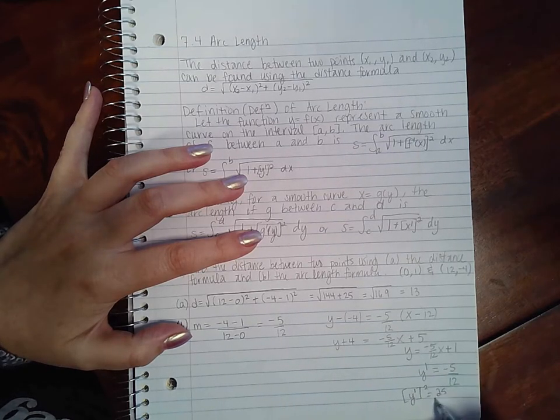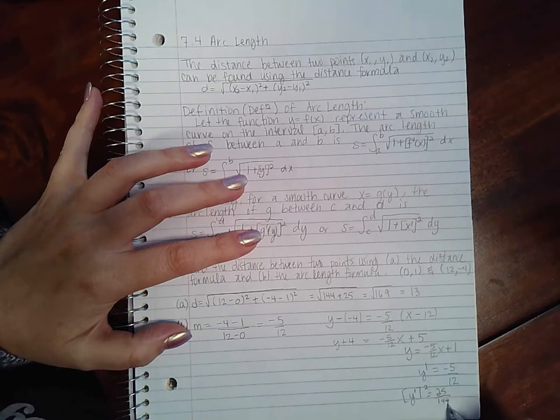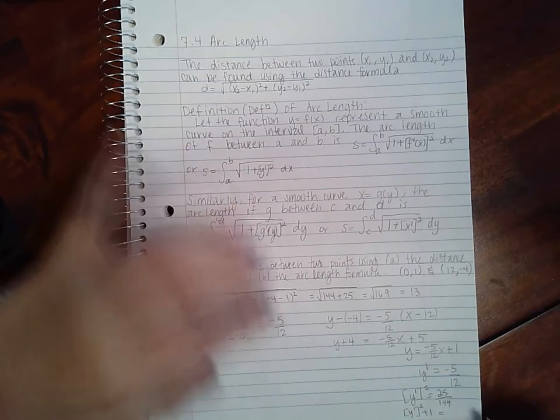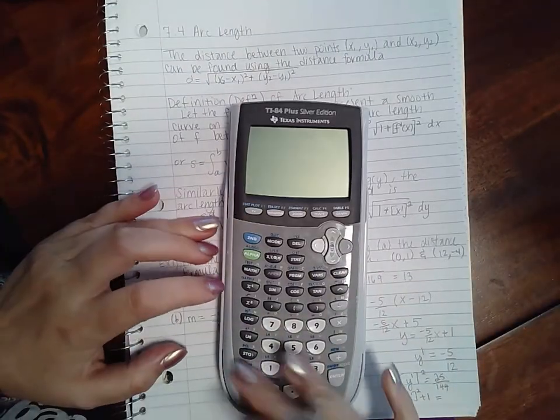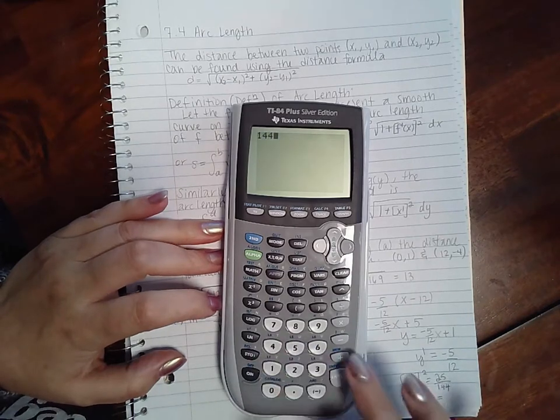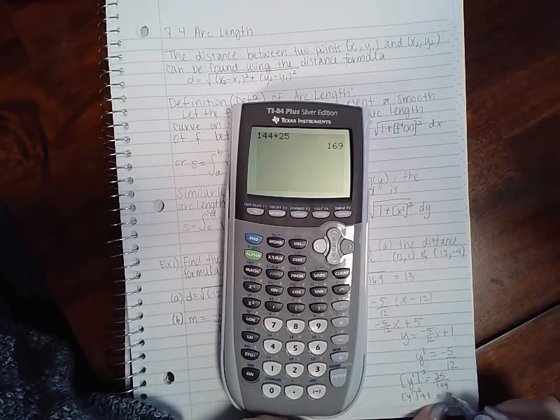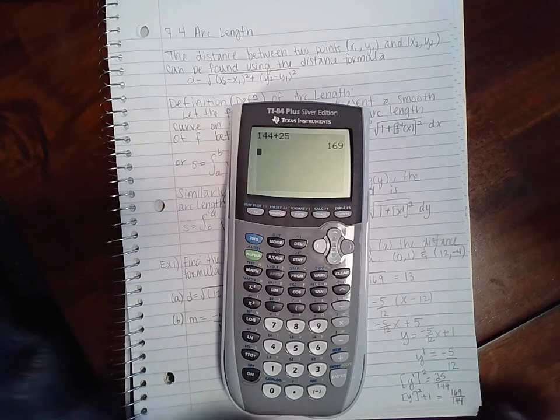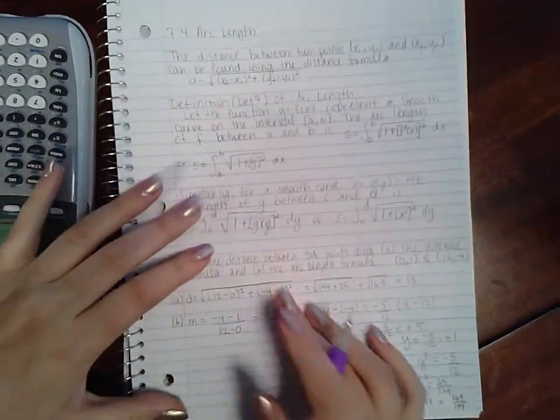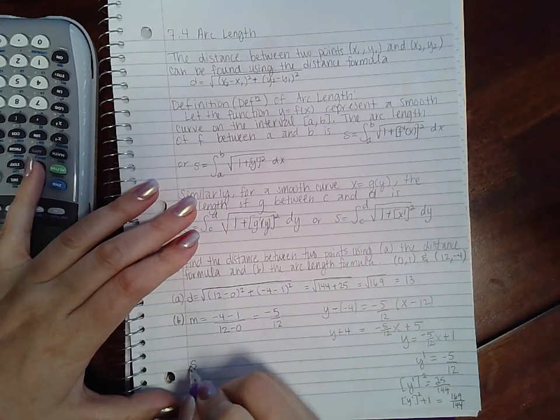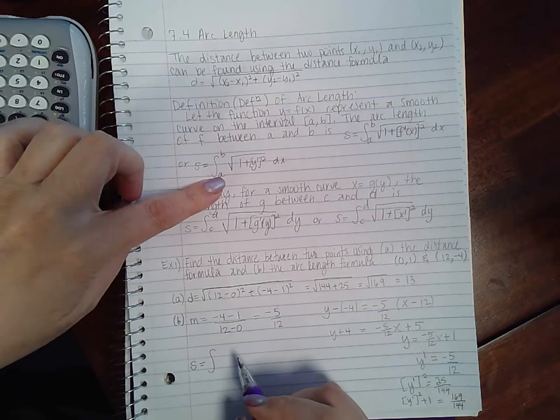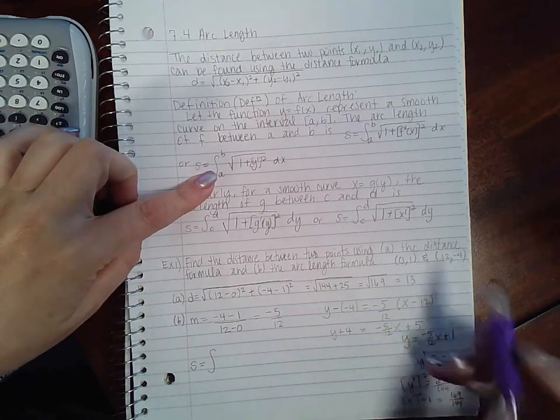Then if I add 1, I will have 144 plus 25, which is 169/144. So if I plug that in here, I'm going to take the integral from a to b, so from one x value to the other, from 0 to 12.